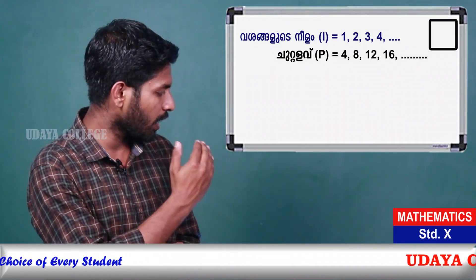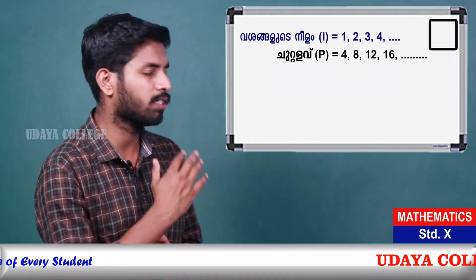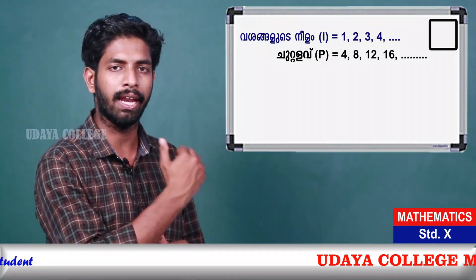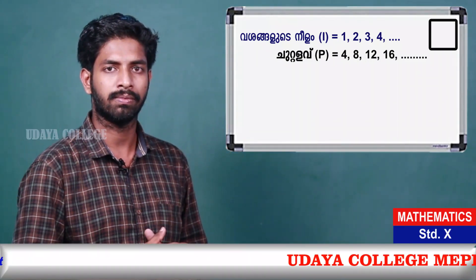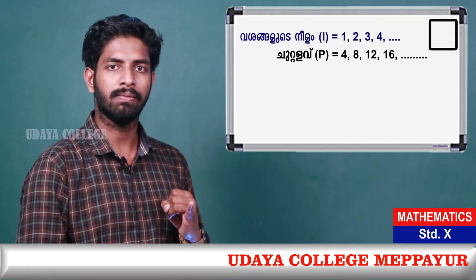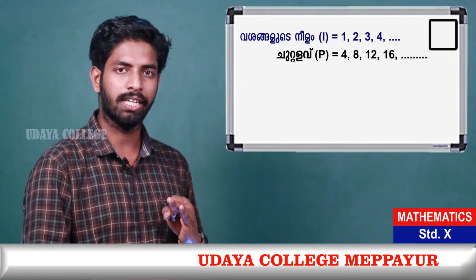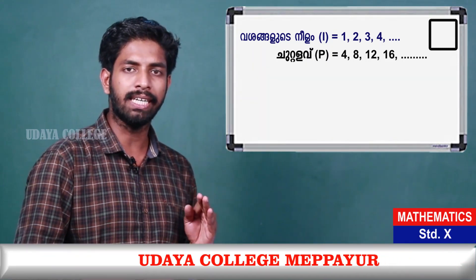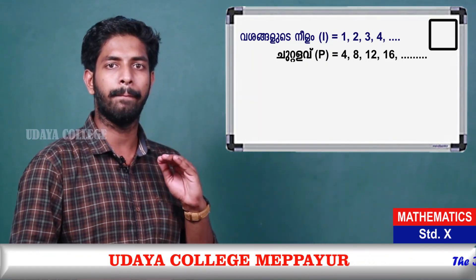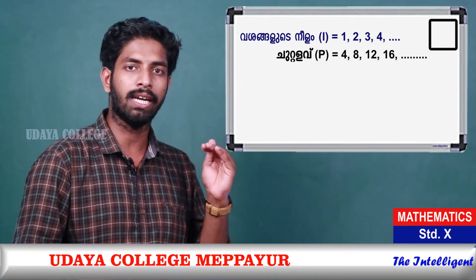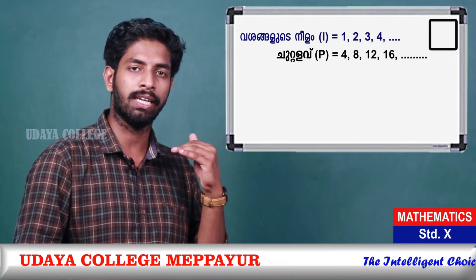So 4, 8, 12, 16 — these are numbers that are multiples of four, with four added each time. Patterns — we can describe it.